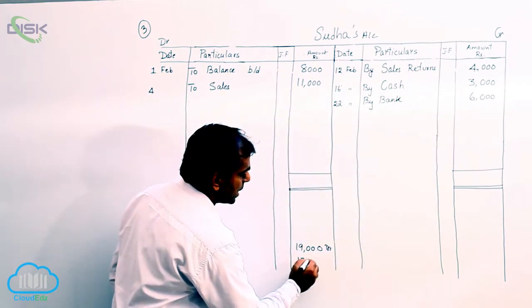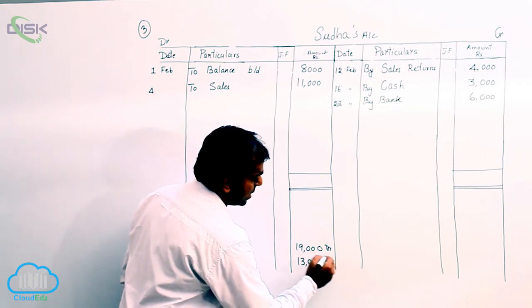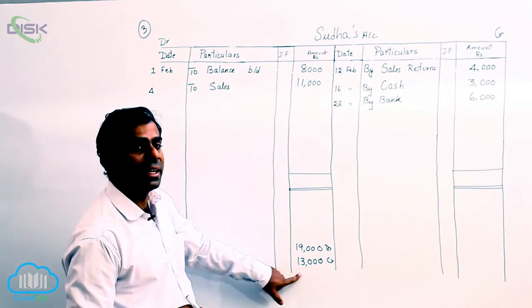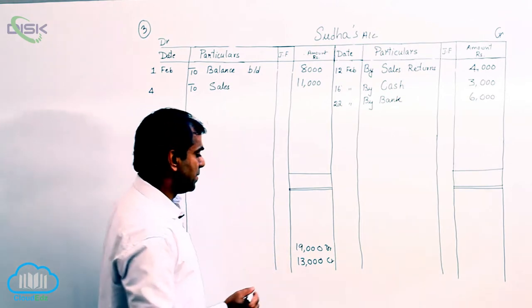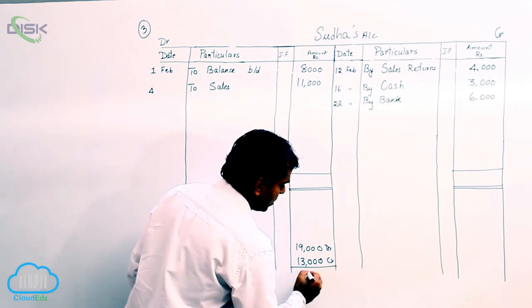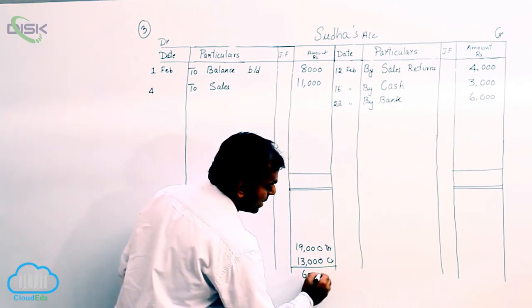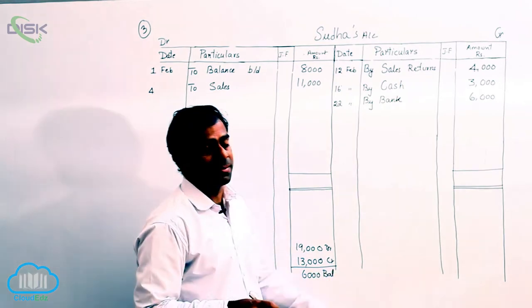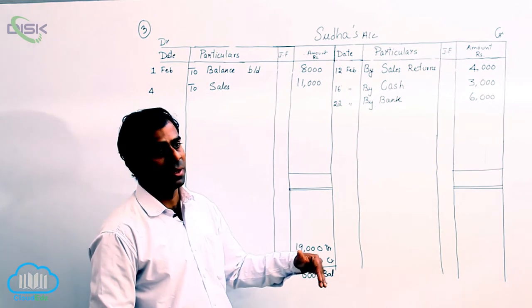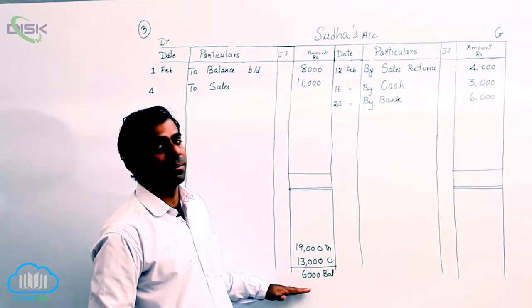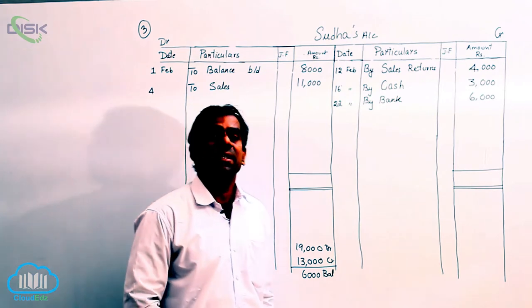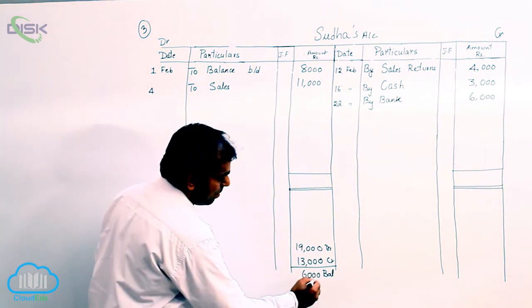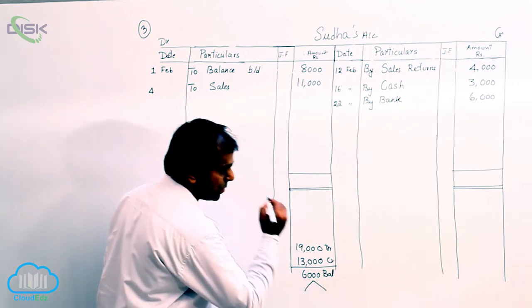So you can say totally she has purchased 19,000 worth from you and she has already returned or given to you 13,000 worth. Now how much she has to give us balance? 6000 is the balance. So in the previous problem, this balance itself we have written as by balance carried down. But here you are not going to write because it is stated that she has settled the account with 10% discount.